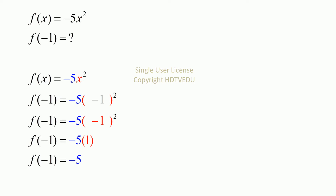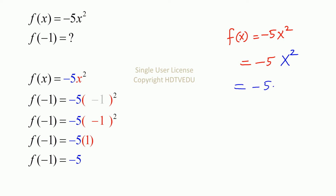Let's look at the value of the function at x equals negative 1. We start with f of x equals negative 5 x squared. At the position of the x, we substitute negative 1, so we have negative 5 times negative 1 to the power of 2. Negative 1 times negative 1 is 1, so we have negative 5 times 1.